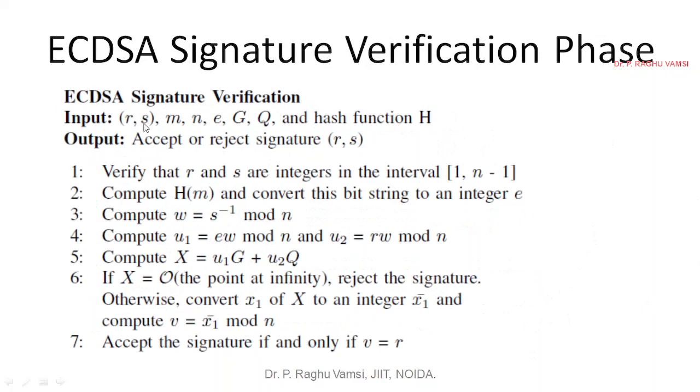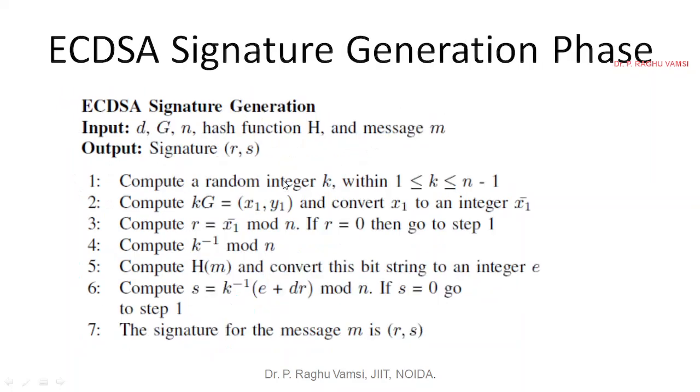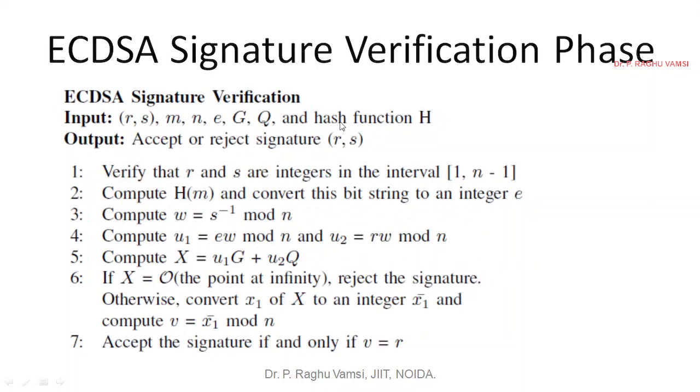Now r, s, m, n, e, G, Q and cryptographic hash function will be the input. Now you are supposed to decide whether to accept this (r, s) signature or not. The signature was done using the private key. Now this verification will be done using the public key.